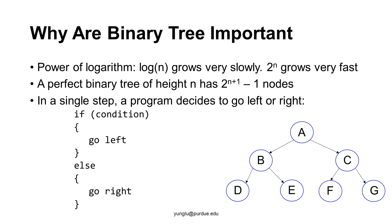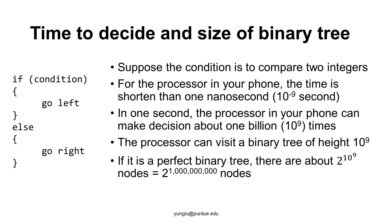Why is binary tree so important? Because in a single step, we can discard half of the data by choosing to go left or to go right. A program goes left or right based on a condition, like comparing the values of two integers. This is a very simple operation inside a computer. A processor inside a mobile phone can compare two integers within a nanosecond — that is 10^(-9) seconds. In one second, this processor can execute more than one billion comparisons. Each comparison selects going left or going right. Thus, in a single second, the processor in a mobile phone can go through a tree with height of one billion.